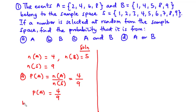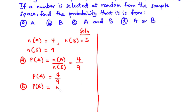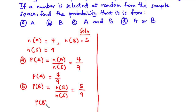Now let's solve for B. We are going to find the probability that the number selected at random from the sample space is from B. The probability of B equals the number of elements in B divided by the number of elements in the sample space. Number of elements in B is 5 and in S is 9, so the probability that event B occurs is 5 over 9.